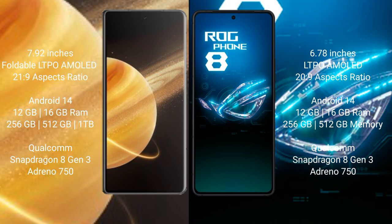Honor Magic V3 runs on the Android 14 operating system. Asus ROG Phone 8 also runs on the Android 14 operating system. Honor Magic V3 comes with 12GB or 16GB RAM and 256GB, 512GB, or 1TB internal storage, with a Qualcomm Snapdragon 8 Gen 3 processor.